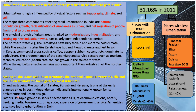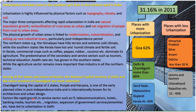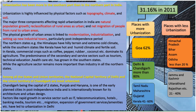Amongst all the states and union territories, the National Capital Territory of Delhi and the Union Territory of Chandigarh are most urbanized, with over 80% of population living in urban areas. Chandigarh, being the capital of two states — Punjab and Haryana — is one of the early planned cities in post-independence India, internationally known for its architecture and urban design. Factors like rapid growth in service sectors such as IT, telecommunications, hotels, banking, media, and tourism, along with migration and expansion of government services, have led to urbanization in Delhi.